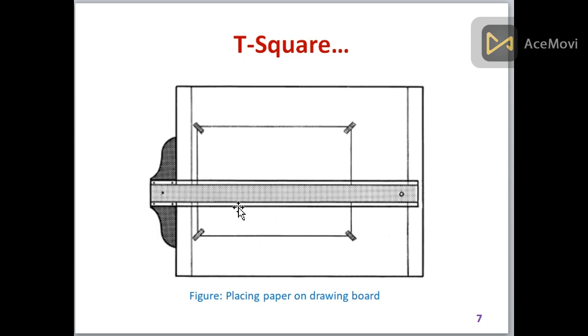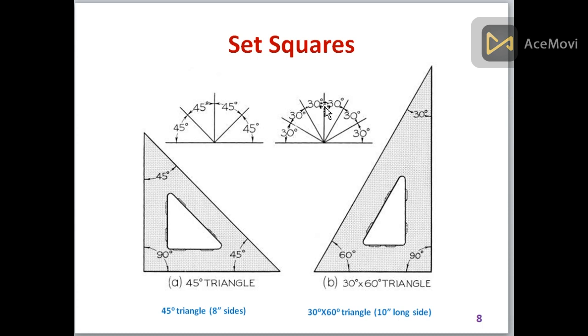These are the set squares. Most of you know what set squares are, but if you don't - set squares are triangle-like scales. One is a 45 degree triangle with 45, 45, and 90. The other one is 30, 60, and 90.